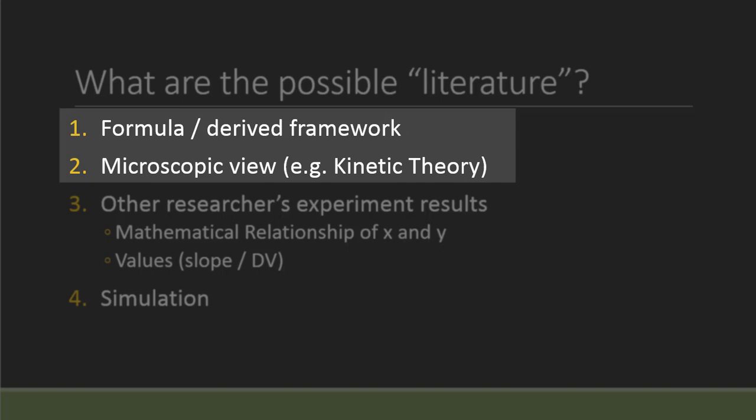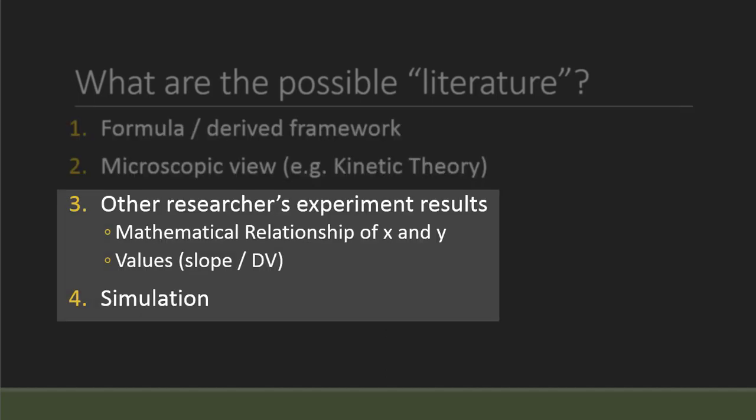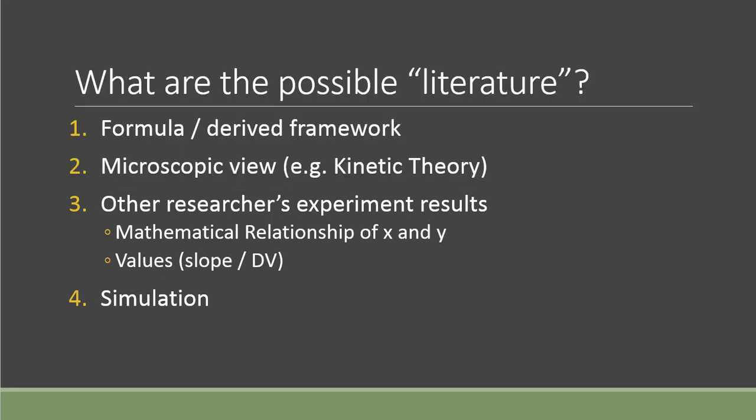The first is a formula which you derive from fundamental laws, or microscopic views like kinetic theory - these should go in the framework section early in your IA. However, if you want to use other researchers' experiments or results, or even simulation for comparison, you can leave these for the end in this section when you compare the literature.